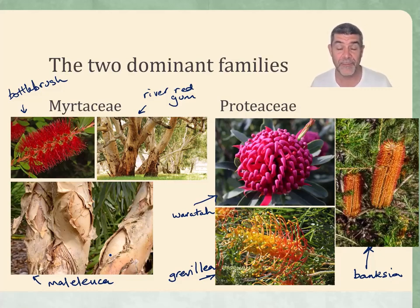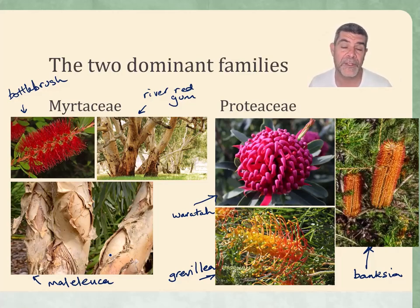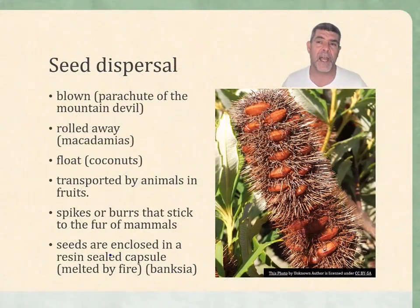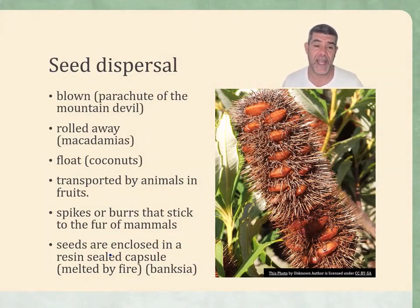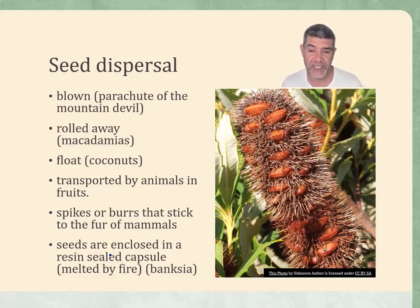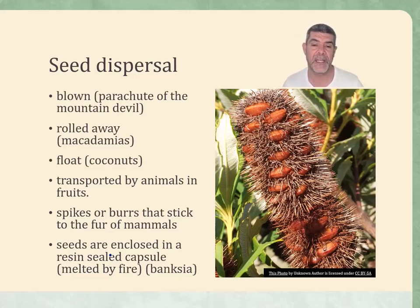This is obviously a very simplified overview of representatives of families that have hundreds of species, but it gives a little bit of an idea of these two main plant groups that dominate the forests of Australia. This is about ways in which the plants have evolved or changed over time and what we can conclude from this. One of the important things when talking about evolution is to look at reproductive strategies, because reproductive strategies are really how genetic information gets from one generation into the next.